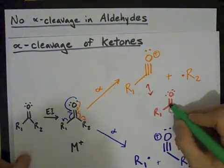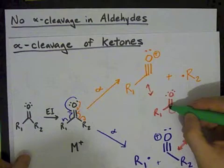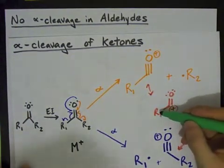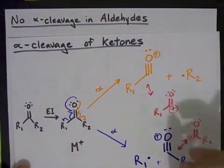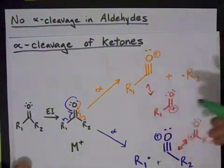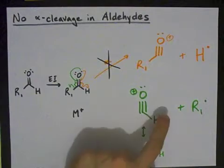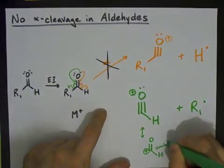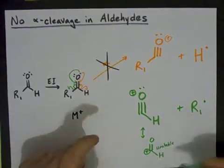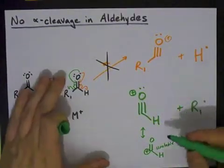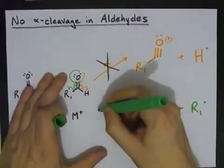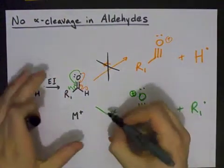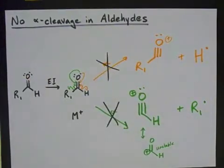This particular carbocation, I guess we could call it, is a little more stable because R1 can donate some electron density and help stabilize it. H is not good at donating electron density. That makes this a little more unstable than you would expect, which means this resonance stabilization doesn't occur quite as much as you would probably expect. And this alpha cleavage is also not likely.